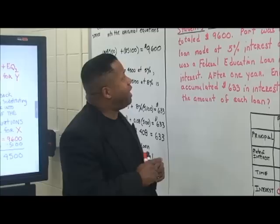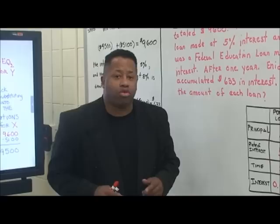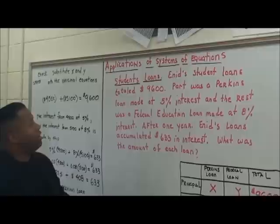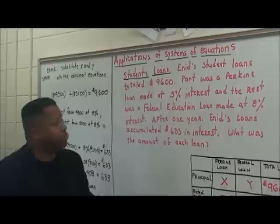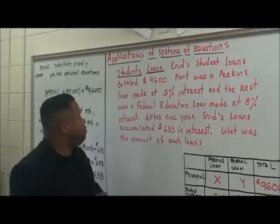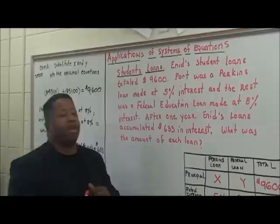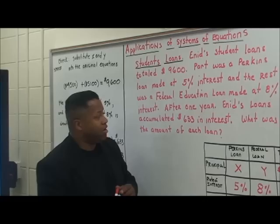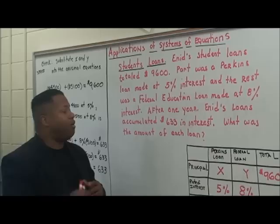Today, we want to basically talk about applications of systems of equations. And we have a particular problem right now that I want us all to do and try to look at. This problem is dealing with student loans. E9 student loans total $9,600. I'm sure we all know about student loans when you're in college and stuff and have to pay them back eventually when we graduate. Part was a Perkins loan made at 5% interest and the rest was a federal education loan made at 8% interest. After one year, E9's loans accumulated at $633 in interest. So what was the amount of each loan?